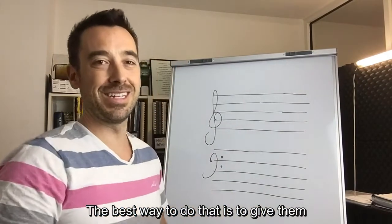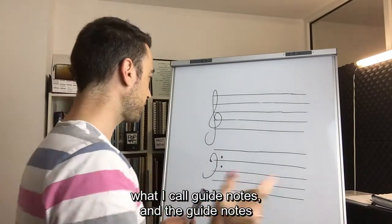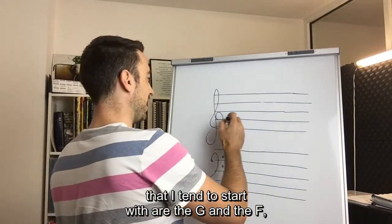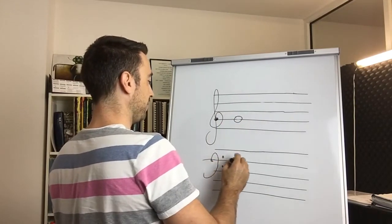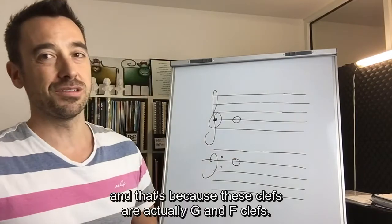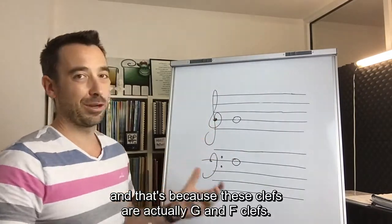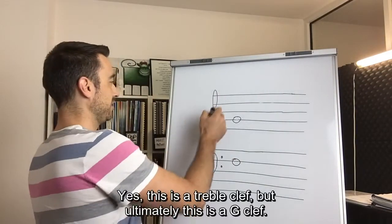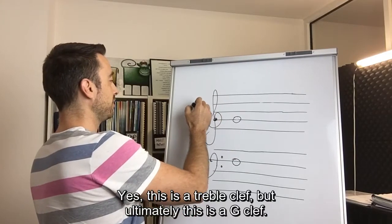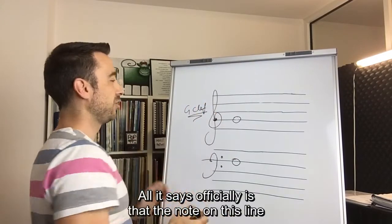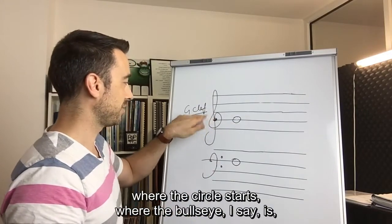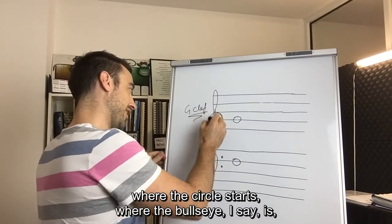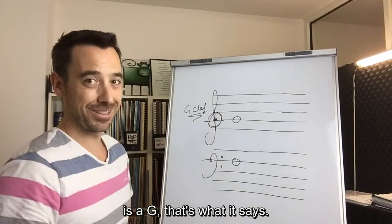The best way to do that is to give them what I call guide notes. And the guide notes that I tend to start with are the G and the F. And that's because these clefs are actually G and F clefs. Yes, this is a treble clef, but ultimately this is a G clef. All it says officially is that the note on this line where this circle starts and where the bullseye I say is, is a G. That's what it says.